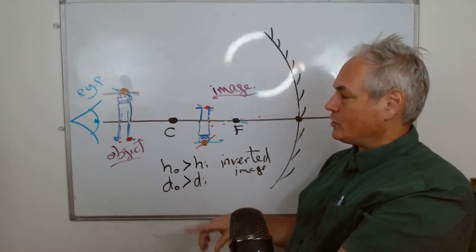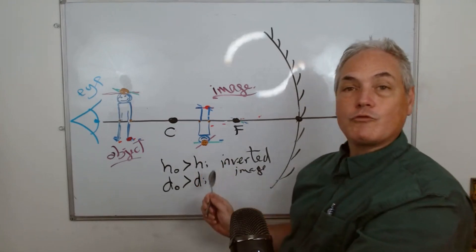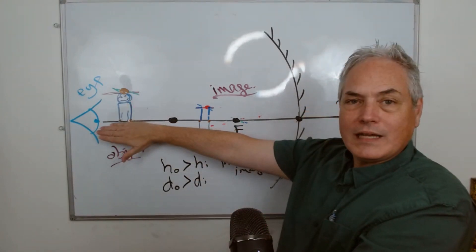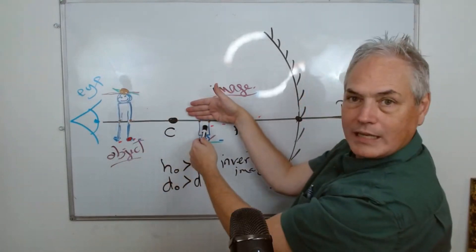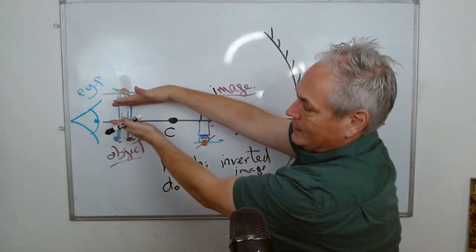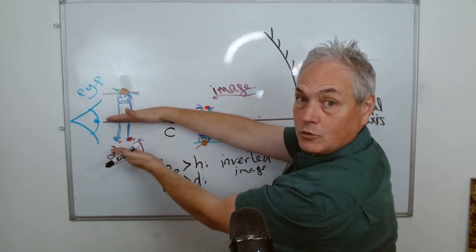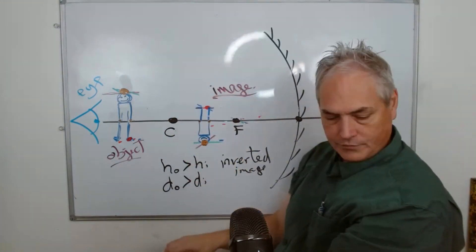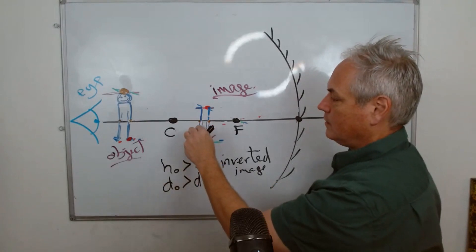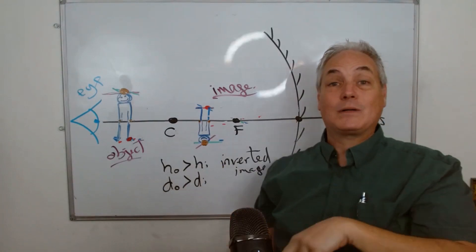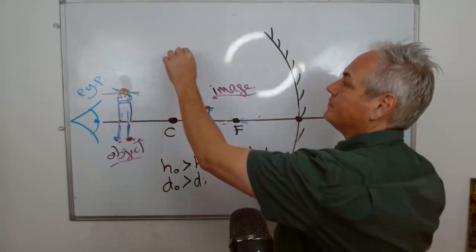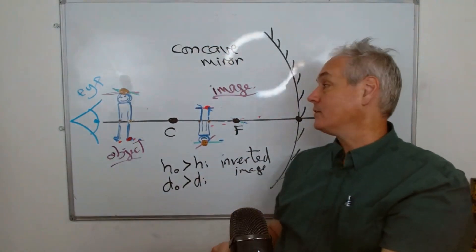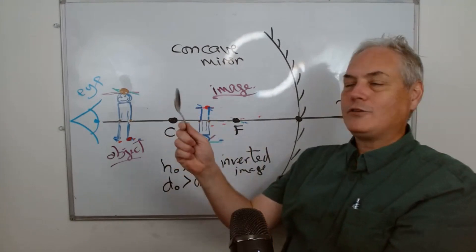So here we've explained with rays of light how we can actually see ourselves upside down. What we had above the line gave us an image below the line. If you have an object that is partially above the principal axis and partially below, you get an image that is partially below and partially above — which is exactly what's happening with the concave mirror when you look at yourself in the spoon.